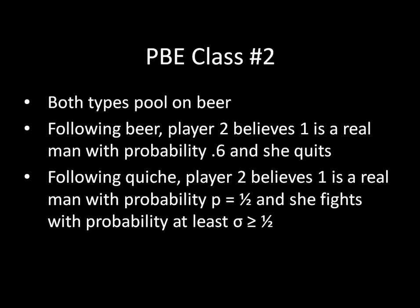We now have the second class of equilibria. Like before, both types drink beer. Also like before, following beer, player two's posterior belief equals her prior, and she quits. The off-the-path quiche circumstance is different from before — now player two has a belief exactly equal to 1/2, and she then fights with probability at least 1/2. Again, this means that we have infinitely many equilibria — any such sigma works here.